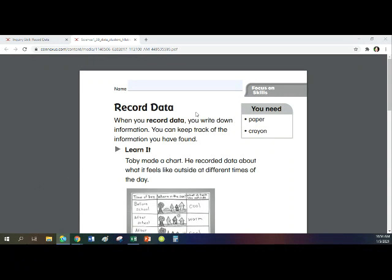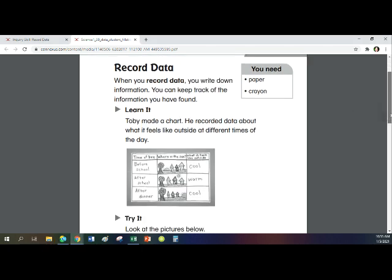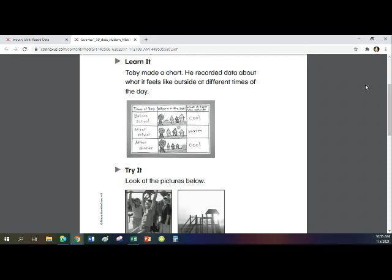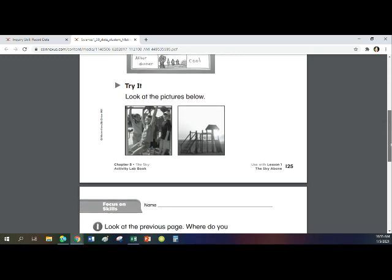At the top, it says record data. And it says you will need paper and a crayon, probably more than one crayon. You want to make your picture colorful. When you record data, you write down information. You can keep track of the information you have found. Learn it. Toby made a chart. He recorded data about what it feels like outside at different times of the day. We know that, that's what we just looked at together.